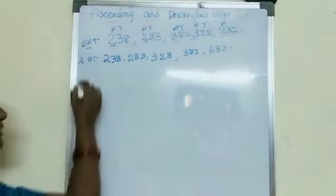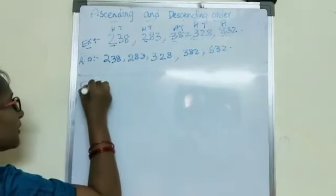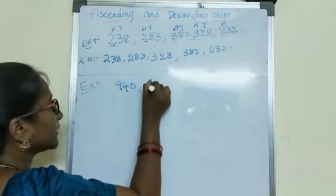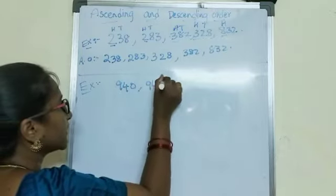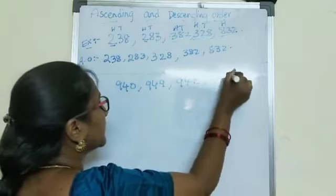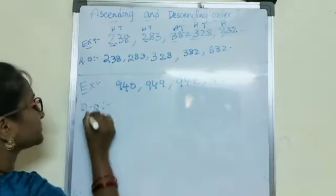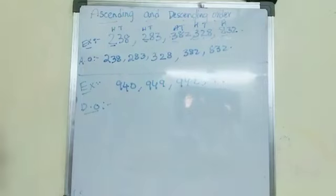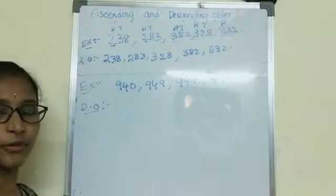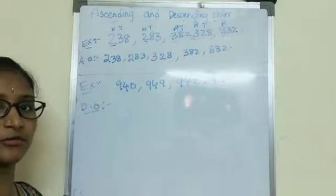Let me take another example to explain you clearly. 940, 949, 942, 946. Arrange these numbers in descending order. Descending order means — remember the dinosaur — big to small, we should arrange.